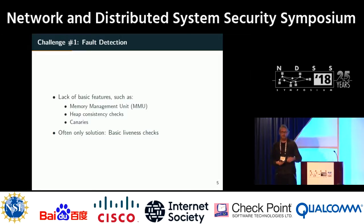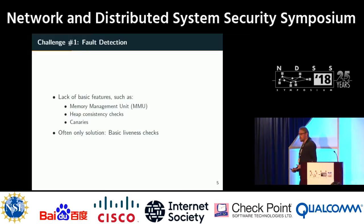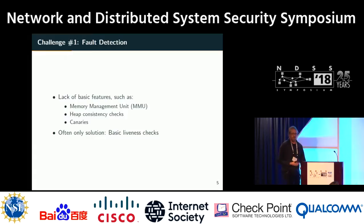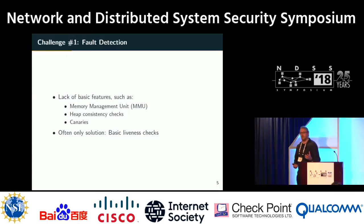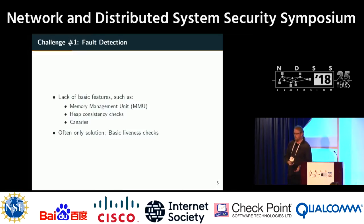Looking at those device types, we identified three distinct challenges for fuzzing embedded devices. The first challenge is fault detection, related to the fact that memory corruptions can be silent. Type 2 and Type 3 devices often lack basic features that turn memory corruptions into visible crashes, like a memory management unit that provides segmentation faults. Often the only solution is to perform basic liveness checks — for instance, just pinging the device or checking if a TCP connection timed out.